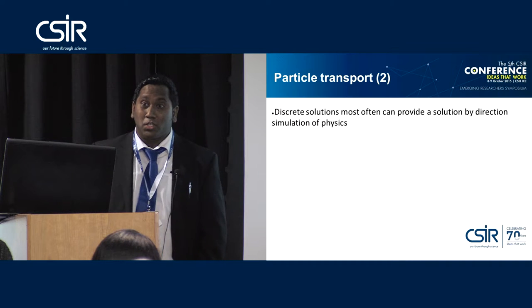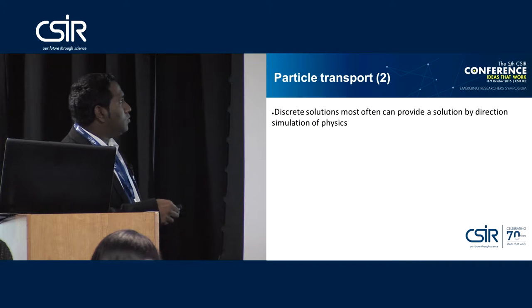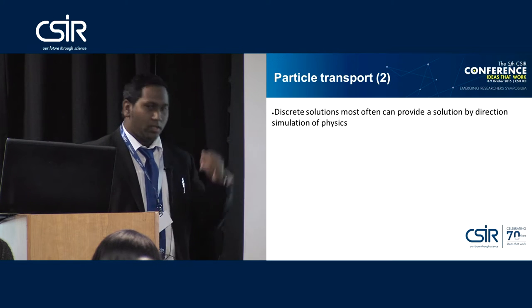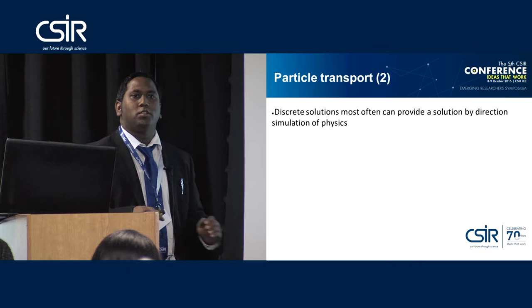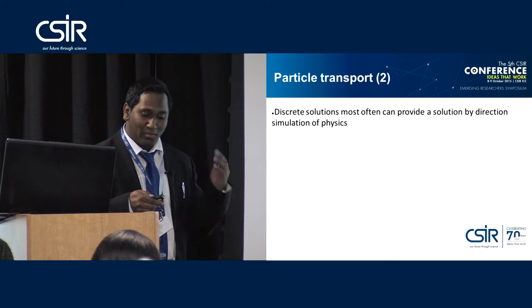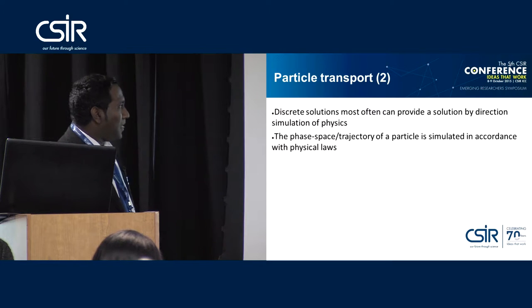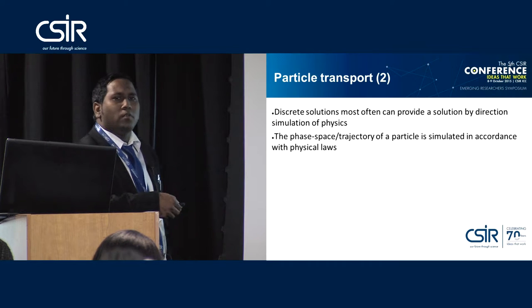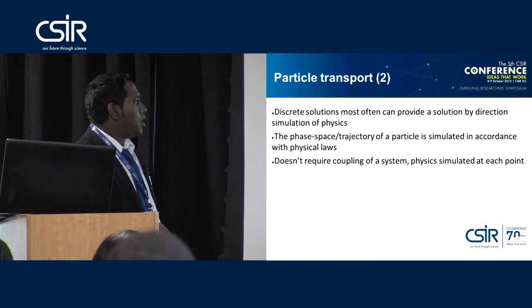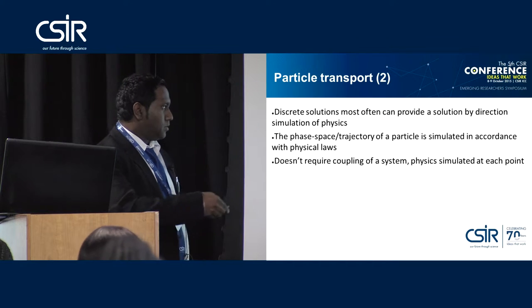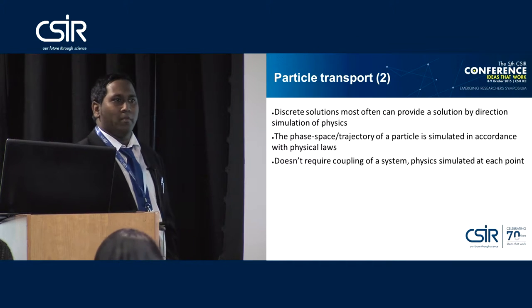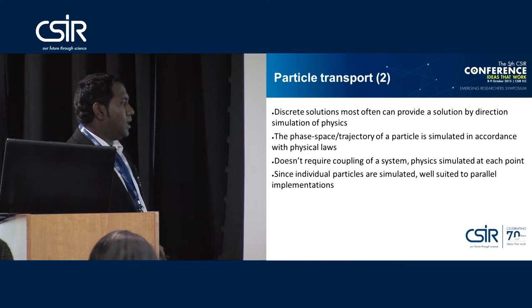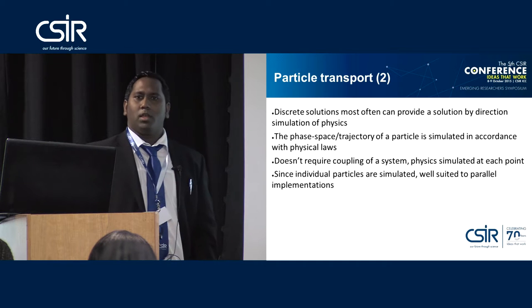So in summary, discrete solutions provide a solution by direct simulation of the physics. It's Newtonian physics. If I take a ball and I drop it, I know how it's going to fall — Newtonian mechanics, simple mechanics, easy to understand. So we simulate the phase space with the actual trajectory of particles in accordance with physical laws. We don't require coupling of the physics of the system, so it makes it very nice, independent, and parallel. Since individual particle simulations are simulated independently, we can run them in parallel.